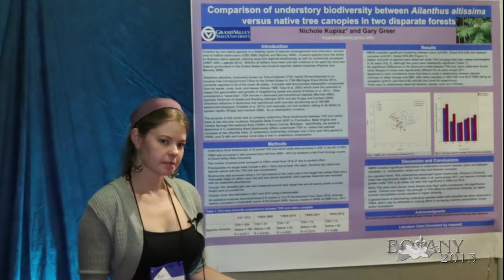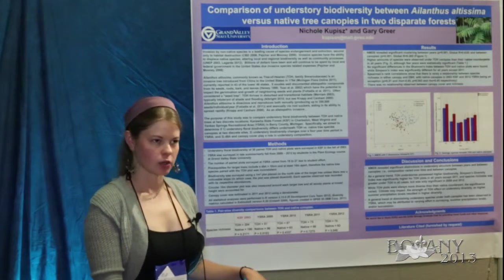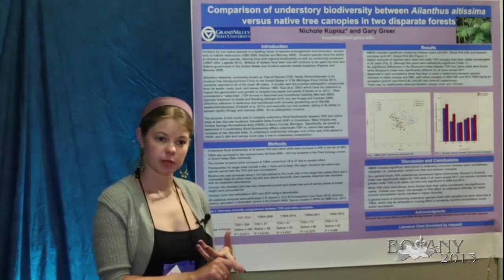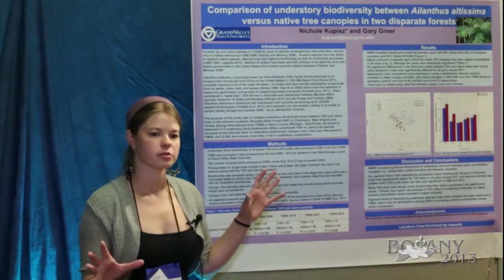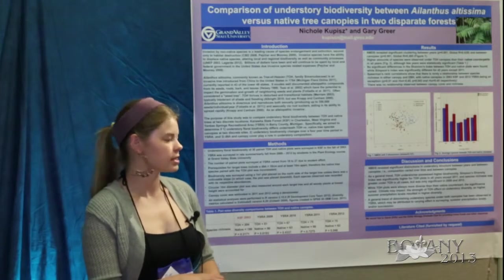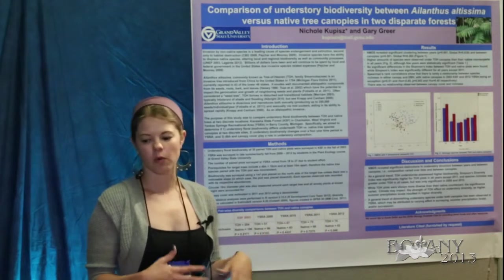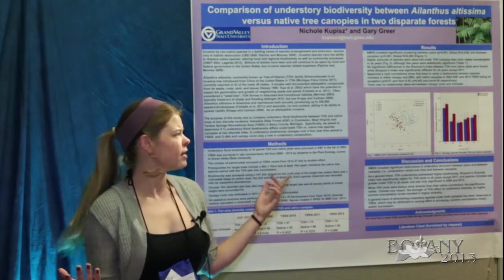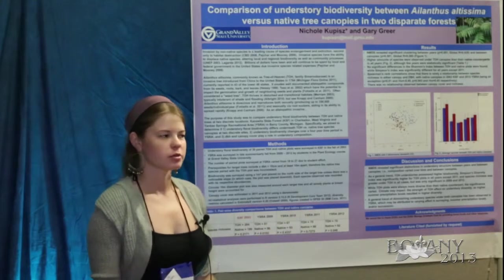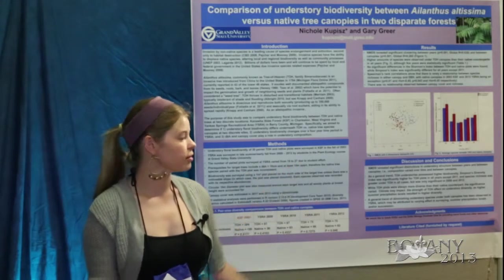Therefore, more species have the chance to appear and grow and thrive in the understory. We looked at native versus invasive understory plants and at forb, woody, legume, and grass species to see if the ratios of any of those were different under Tree of Heaven versus native pairings. We didn't find any consistent differences — every once in a while forbs would differ, or there would be more invasives under Tree of Heaven, but no consistent pattern.